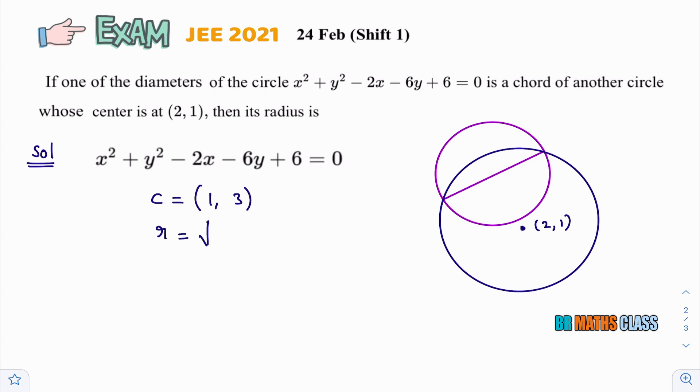Now, find radius. You know the formula. Radius formula is root over g square plus f square minus c. Here, this is minus g minus f now. From this only, you can write g square plus f square. G square, that is 1 whole square. That is 1 plus f square. 3 square is 9 minus c. What is c here? c is plus 6.